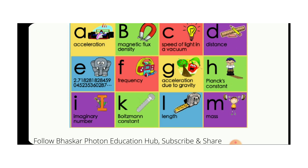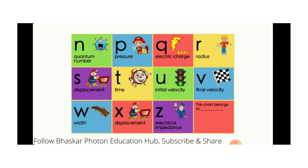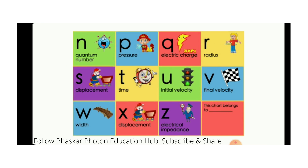L is the length. M is the mass. N is the quantum number. P is the pressure. Q is the electric charge. R is the radius. S is the displacement. T is the time. U is the initial velocity and V is the final velocity. When a body is in motion, you can identify the initial velocity and the final velocity.